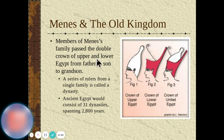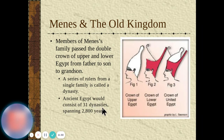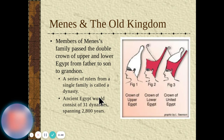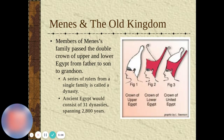Members of Menes' family passed the double crown of Upper and Lower Egypt from father to son to grandson. A series of rulers from single families is called a dynasty. Ancient Egypt would consist of 31 dynasties spanning 2,800 years. For example, it would go from my dad to me and then to my grandson — someone could reign for a hundred years, meaning you technically might not take over until you're 75 years old.